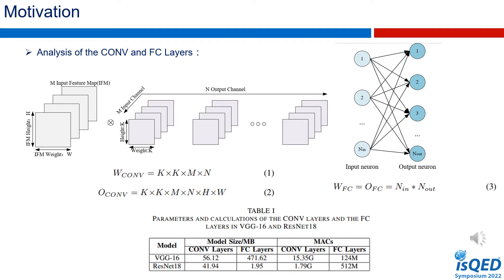To achieve a better trade-off between compression rate and hardware performance, the amount of parameters and computation in the CONV layers and FC layers are analyzed to explore the appropriate compression method. Given a CONV layer with N input channels and N output channels, its kernel size is K multiplied by K. The number of weights W_CONV and MACs in this layer are given by Formula 1 and 2 respectively, where H and W represent the height and width of the feature map.